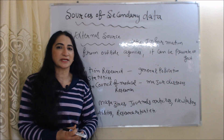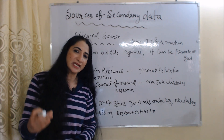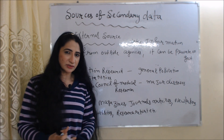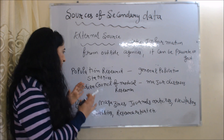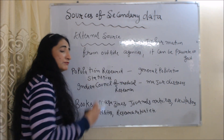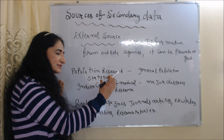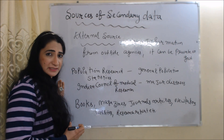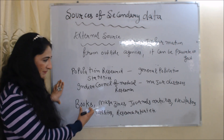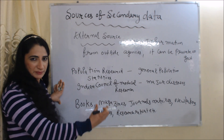External sources means taking information from outside agencies — these can be private agencies or government agencies. For example, population research statistics can give you information about the general population, and the Indian Council of Medical Research can give you information about major diseases. Other external sources of secondary data include books, magazines, journal articles, newspapers, websites, and research reports.